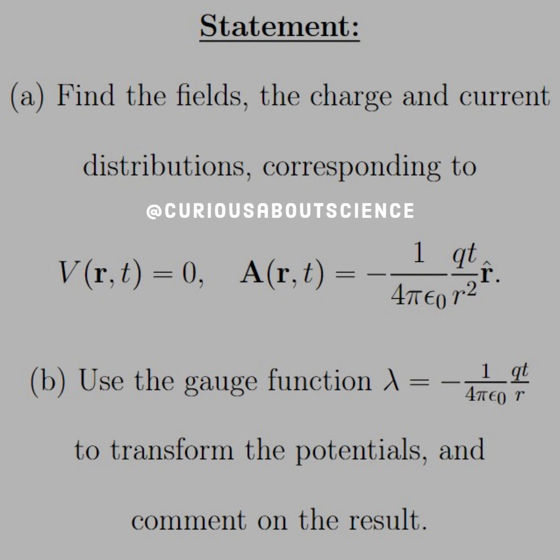Part B: use the gauge function lambda equal negative 1 over 4 pi epsilon naught Qt over r to transform the potentials and comment on the results. Okay, so off the bat, we already know that this looks kind of funky and kind of inverted to what we normally see. So let's see how we deal with it.